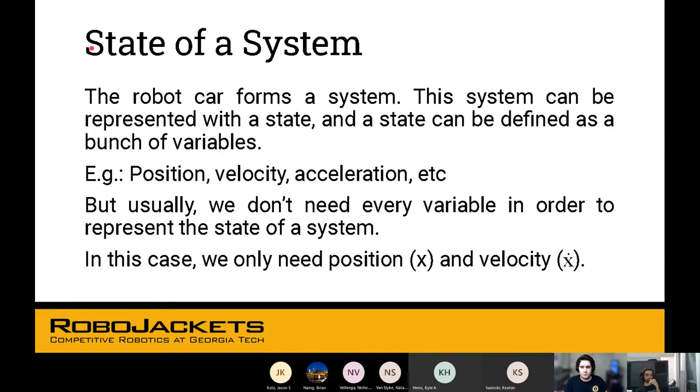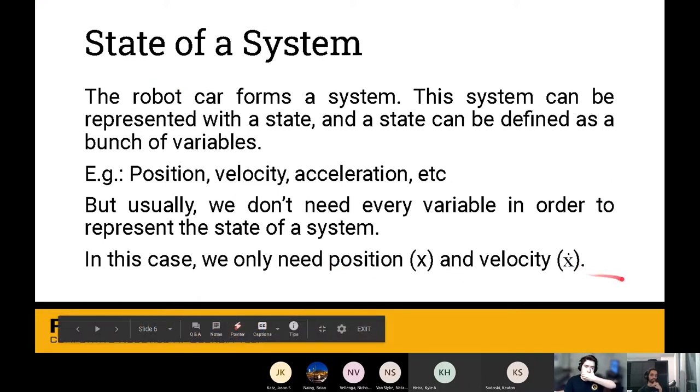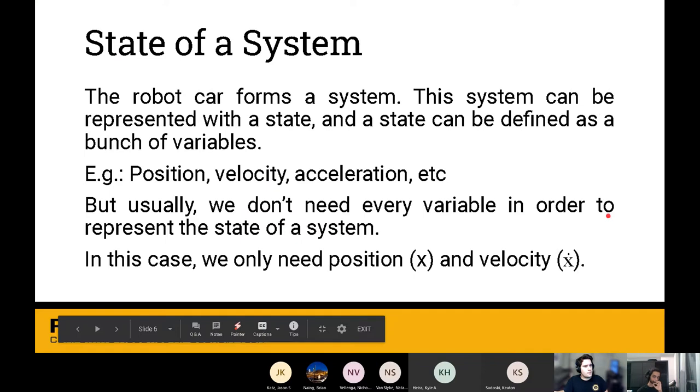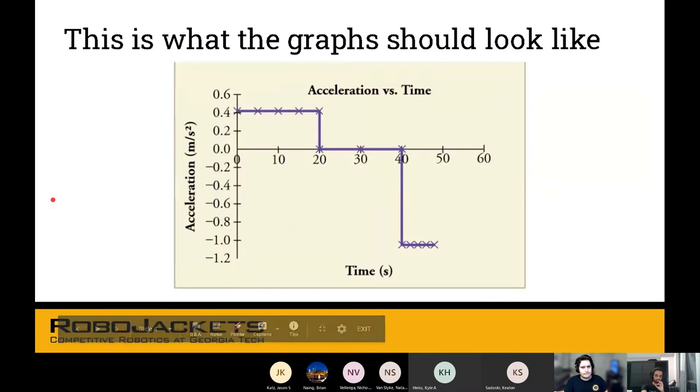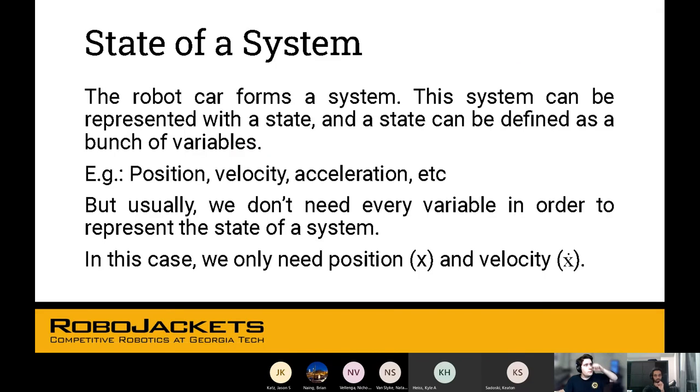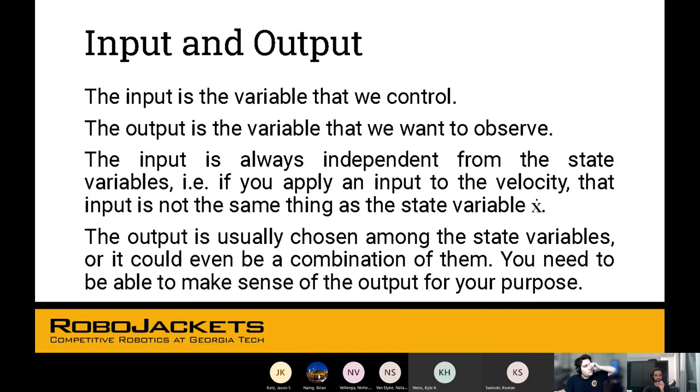The robot car forms a system, and the system can be represented with a state. The state can be defined as a bunch of variables: position, velocity, acceleration. But you don't always need every variable to represent the state of the system. In this case, we only need position and velocity because we can represent the acceleration as a function of position and velocity. There's some complex matrix math involved that we won't be going over.